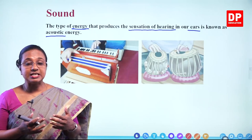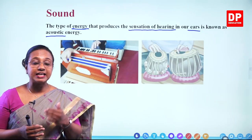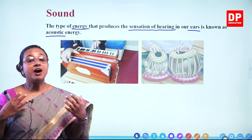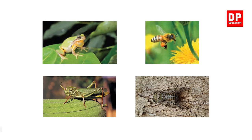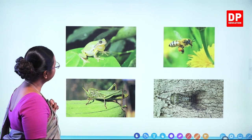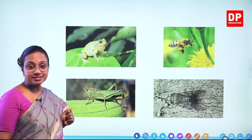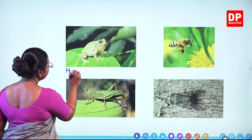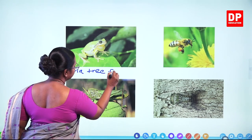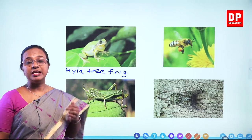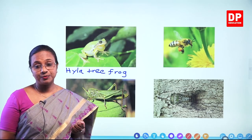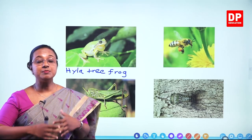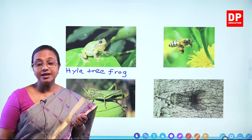Before going into detail about the properties of sound waves and the characteristics of sound, we will first discuss how sound is generated by different sound sources. There are four pictures of different animals. This is a frog, but a special type known as the hyla tree frog, commonly found in South America. The male hyla tree frogs can generate a very loud sound, and the sound can travel ten times farther than the sound produced by other types of frogs.